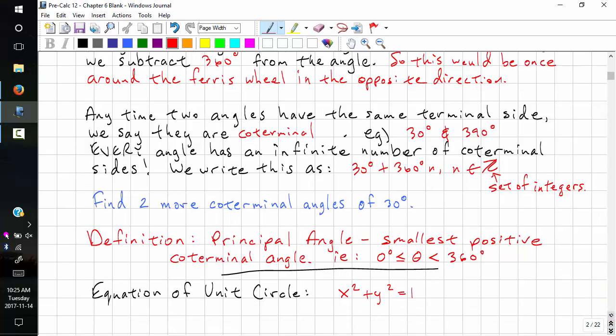In math we use z. Find two more coterminal angles of 30. We can do 30 degrees minus 360 degrees. That's negative 330 degrees. We can do 30 degrees plus 720 degrees, and that would be 750 degrees.